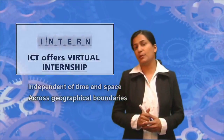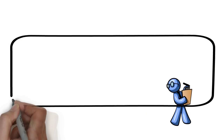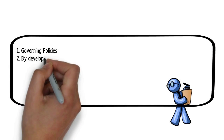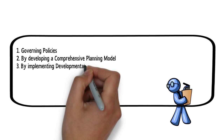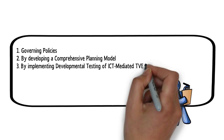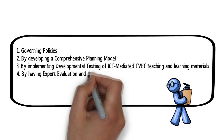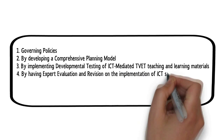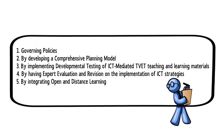We have now come to the final section on how to implement ICT in TVET teaching and learning. This section addresses necessary planning for integrating ICT in TVET teaching and learning. Firstly, by governing policies to integrate ICT. Secondly, by developing a comprehensive planning model for integrating ICT in TVET teaching and learning. Thirdly, by implementing development testing of ICT-mediated TVET teaching and learning material. Fourthly, by having expert evaluation and revision on the implementation of ICT in TVET teaching and learning strategies. And finally, by integrating open and distance learning.